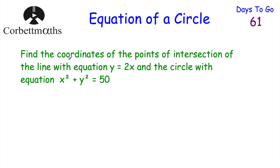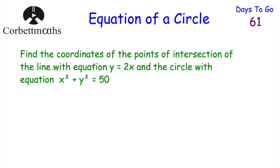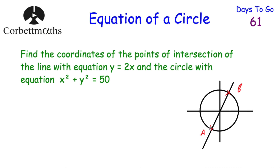Last question: find the coordinates of the points of intersection of the line y equals 2x and the circle x squared plus y squared equals 50. From a sketch, we can see they intersect at two points, A and B. We're going to solve these as simultaneous equations — we know x squared plus y squared equals 50, and y equals 2x.